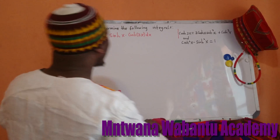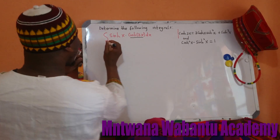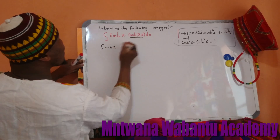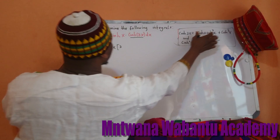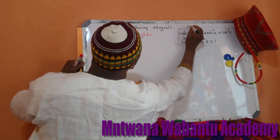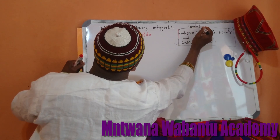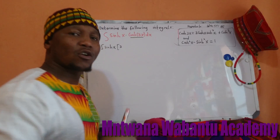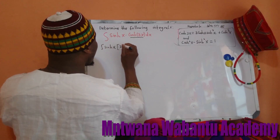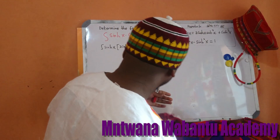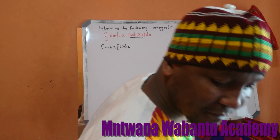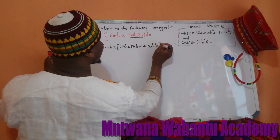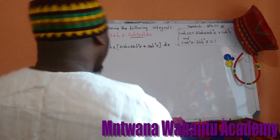So what is cosh(3x)? You have to know this. Cosh(3x) is a hyperbolic identity. These are hyperbolic identities. So cosh(3x) equals 3cosh(x) plus 4cosh³(x). That is the hyperbolic identity for cosh(3x).